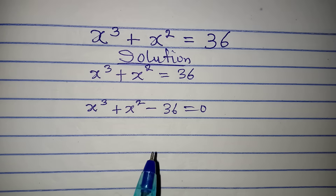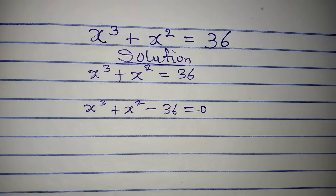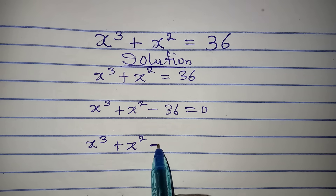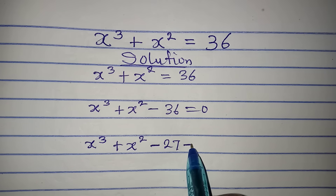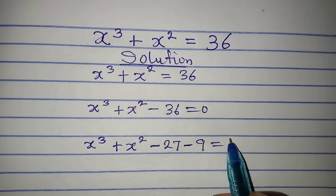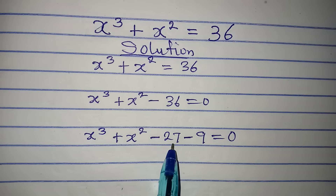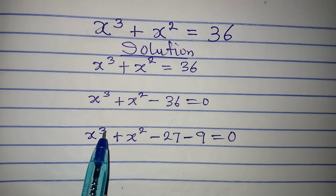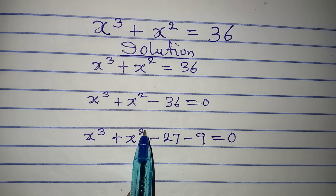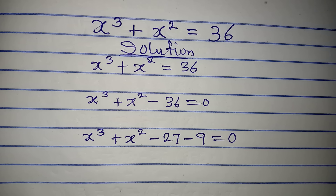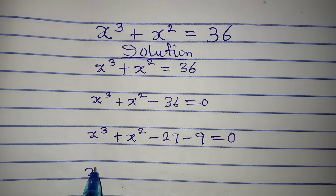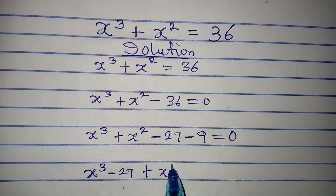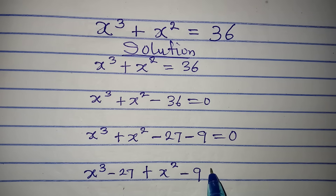The next step is to break 36 down. I'm going to have x to the power of 3 plus x to the power of 2 minus 36, and here 36 gives us 27 minus 27 minus 9, which gives us 36. I brought out minus 27 because 27 can be written as a power of 3, and 9 can be expressed as 3 squared. So we match what we have: x to the power of 3 minus 27, then plus x squared minus 9 equals 0.